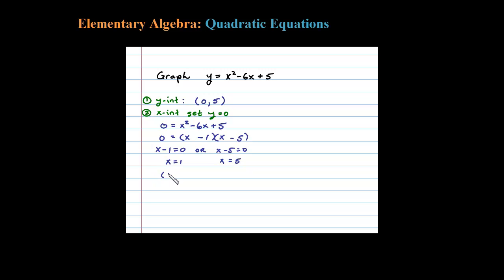That tells me there's going to be 2 x-intercepts. So the x-intercepts are going to be here at 1,0 and 5,0. Remember, x-intercepts are ordered pairs.